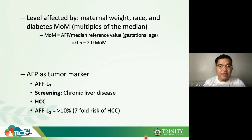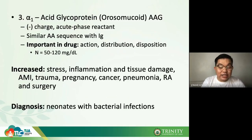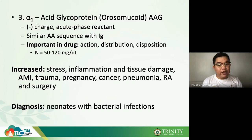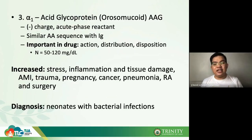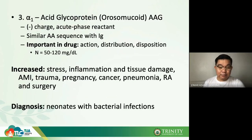Alpha-1 acid glycoprotein, also known as AAG or orosomucoid, is a negatively charged, positive acute phase reactant. It has a similar amino acid sequence to immunoglobulin. It is important in drug action, distribution, and disposition — making it relevant in drug metabolism.